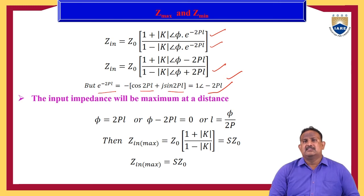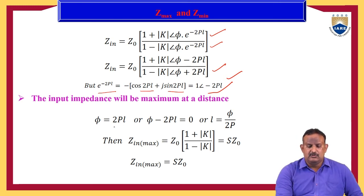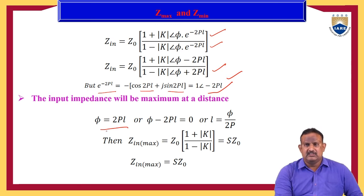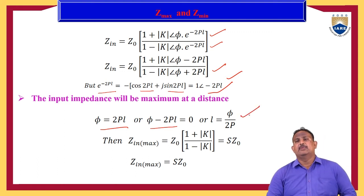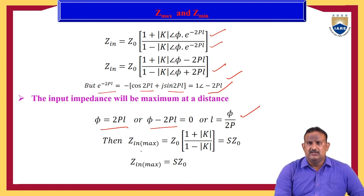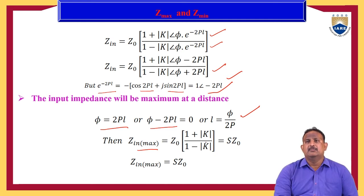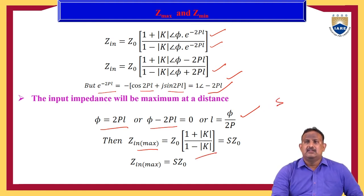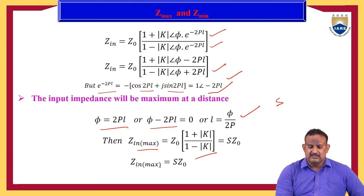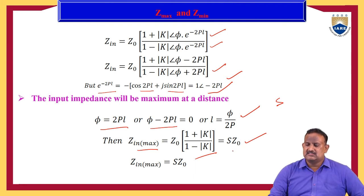At that distance, the input impedance is maximum: Z_n_max = Z₀ · (1 + |k|)/(1 − |k|), which is nothing but S·Z₀, where S is the voltage standing wave ratio (VSWR). Traveling a further distance of lambda by 4 from where impedance is maximum gives the minimum impedance. Thus the minimum impedance condition occurs at L = φ/2π + λ/4.